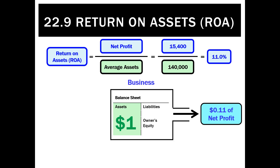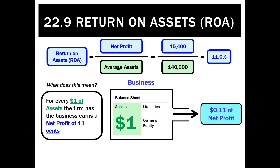It's a good ratio for comparing businesses of different sizes. Using this, we can compare a small business with only $100,000 of assets to Apple, which has $150 billion of assets, because it's all going to be relative when we put in the net profit.